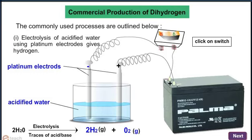Two molecules of water on electrolysis with traces of acid or base gives two molecules of hydrogen gas and one molecule of oxygen gas.